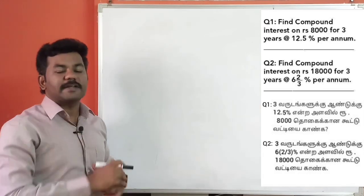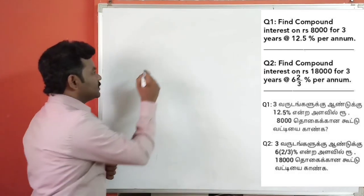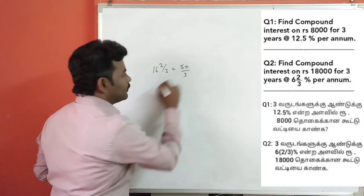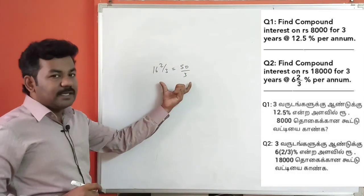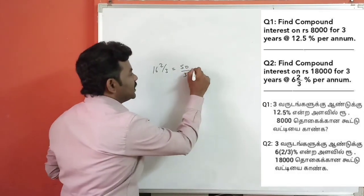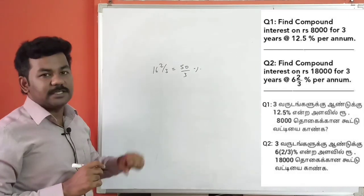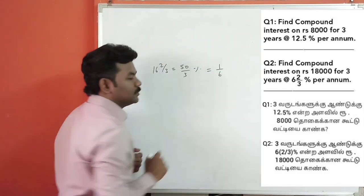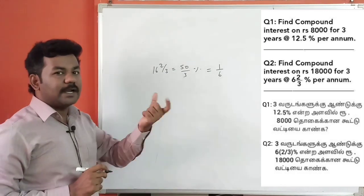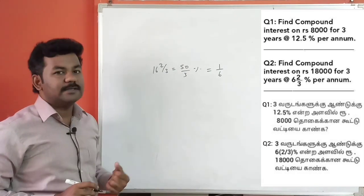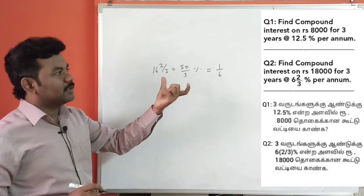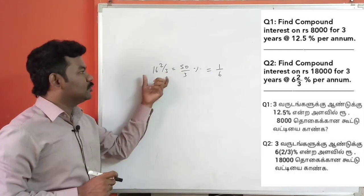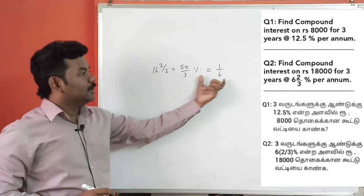16 and 2 by 3 is a mixed fraction. You convert it to an improper fraction, which gives 50 by 3. Then divide by 100 and you get 1 by 6. So 16⅔% converts to 1 by 6. Now take 18,000 and multiply by 1 by 6.